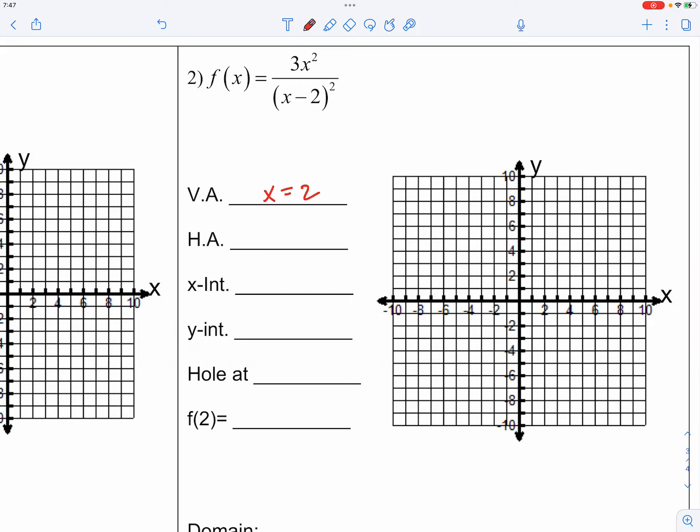Oh, wonderful. X equals 2. Because when x is equal to 2, the denominator becomes 0, and then the whole fraction will become undefined, right? So that's the whole story.